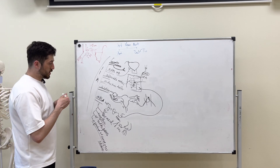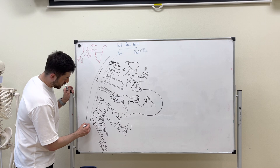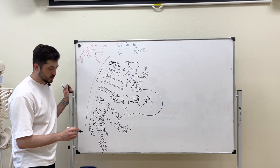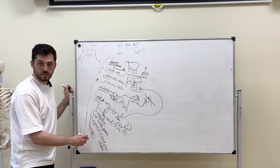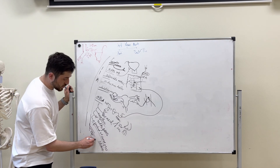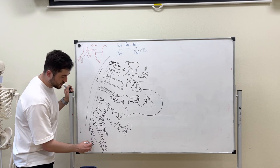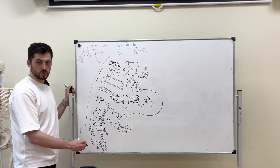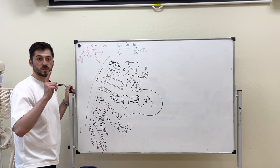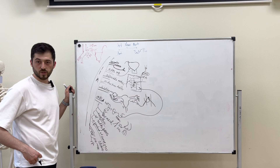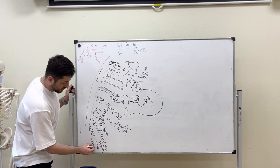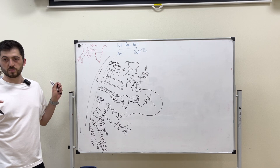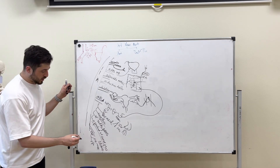The next important artery is the obturator artery. It has branches: ramus anterior — which supplies blood to the adductor muscles — and ramus posterior with ramus acetabularis, which is really important in the blood supply of the hip joint at the acetabulum. The obturator artery forms anastomosis with the inferior epigastric artery from the external iliac artery, and this anastomosis is called corona mortis.